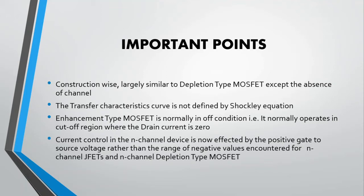If you remember, in the case of N-channel junction field effect transistors and N-channel depletion type MOSFETs, a range of negative values of VGS was used to control the drain current. But now, the positive value of the gate-to-source voltage will control the drain current in the case of the enhancement type MOSFET.